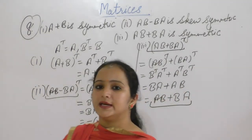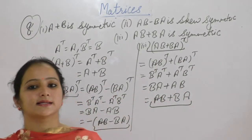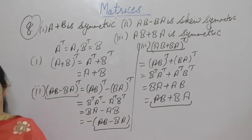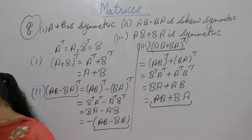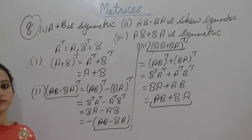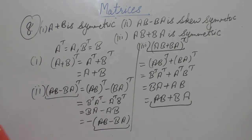So the transpose of this matrix is equal to that matrix. Therefore AB plus BA is a symmetric matrix.